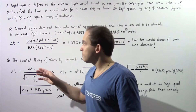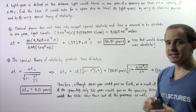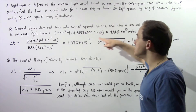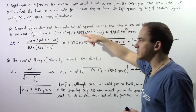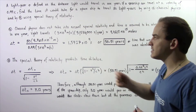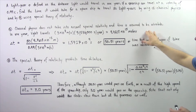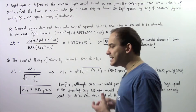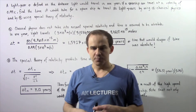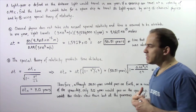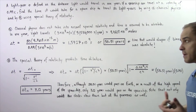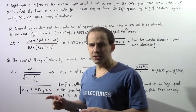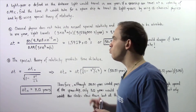Let's begin with Part A. Classical physics does not take into account the special theory of relativity, which means there is no time dilation, and time is assumed to be an absolute quantity. To find the time that would elapse on the spaceship, we first have to find how many meters a light year represents — that is, how far light travels in one year.